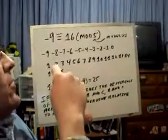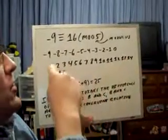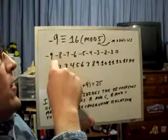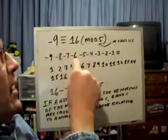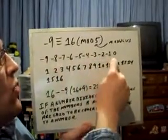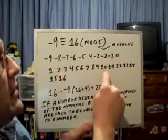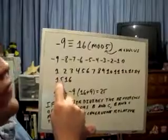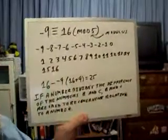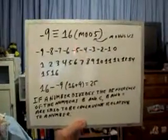Because negative 9 would not be congruent to 16 modulus 3. Because if you're going to count backwards, by 3, you'd go 8, 7, 6, 5, 4, 3, 2, 1, 0, 1, 2, 3, 4, 5, 6, 7, 8, 9, 10, 11, 12, 13, 14, 15. You'd end up at 15 instead of 16. And there you go.